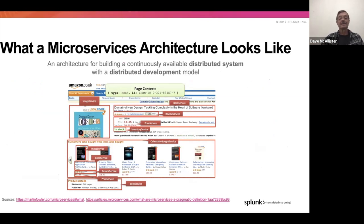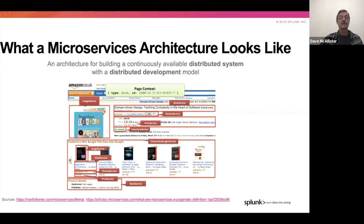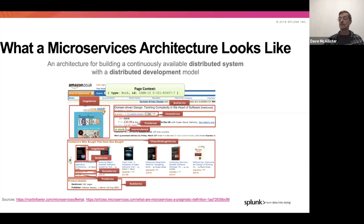Microservices organizations and applications themselves can be very complex. Building continuously available distributed systems is a challenge when you also do it in a distributed development model for a complex environment. From Martin Fowler's work on microservices — looking at the amazon.co.uk model with all the literal services involved — as you can see, there are a number of these. Now take that complexity, add elastic capabilities, and all of a sudden you have a much larger scale of services to keep track of across larger and larger environments.